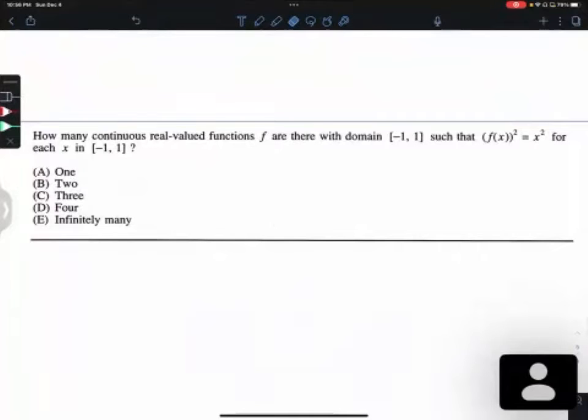In this video, we'll find the answer of this question. How many continuous real-valued functions f are there with domain from negative one to one closed, such that f of x to the second power equals x squared?